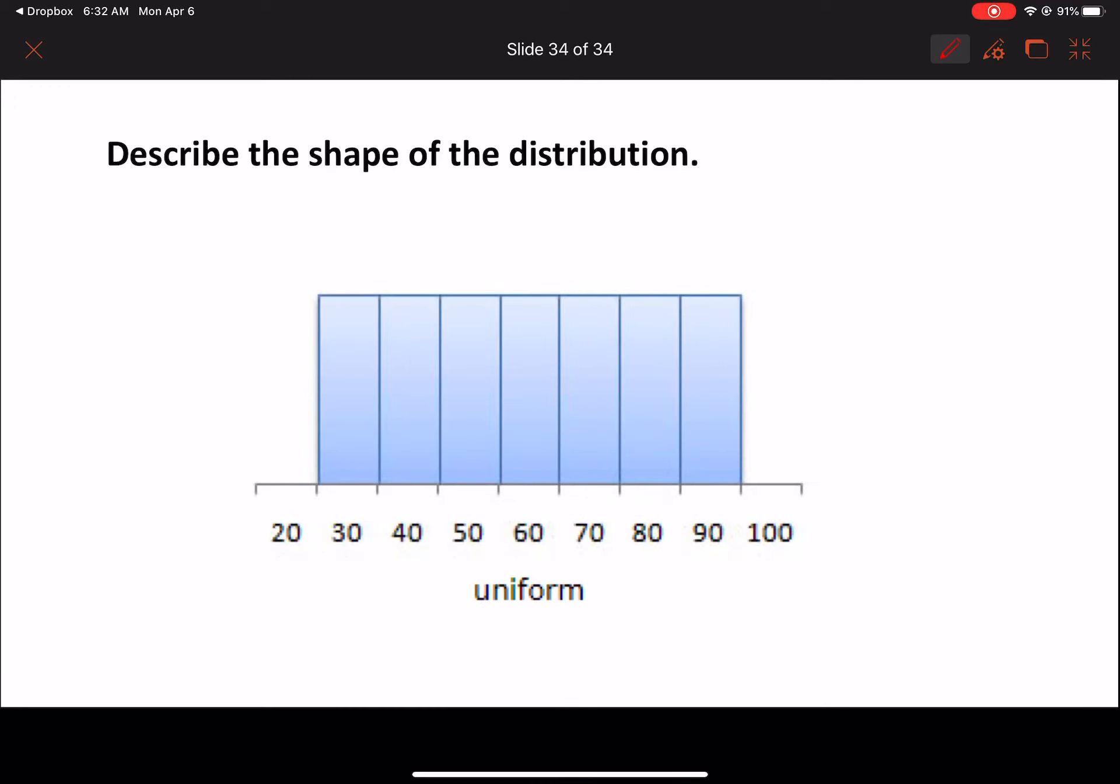Finally, this one. Oh, look at that. I already had the answer there. This one is a uniform distribution because it is a big rectangle.